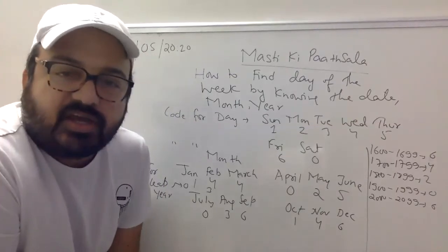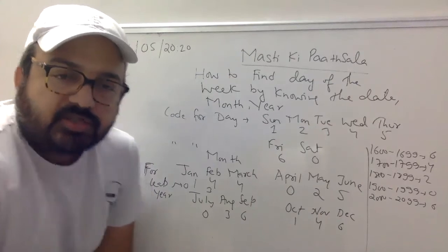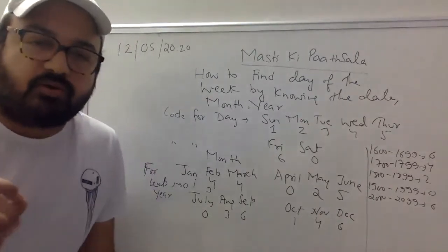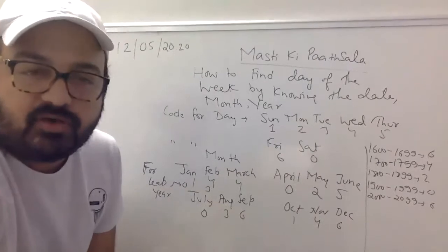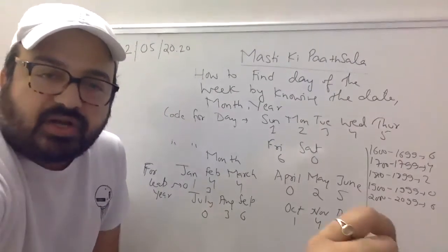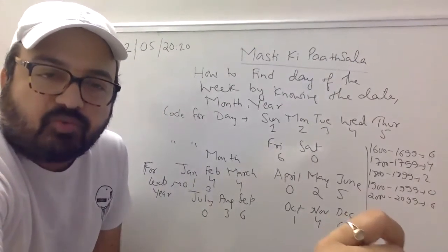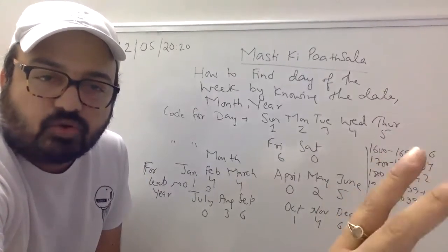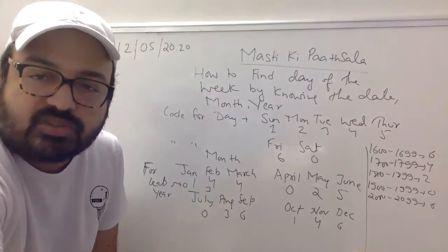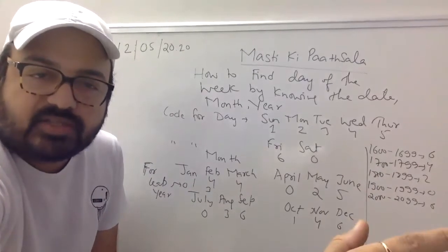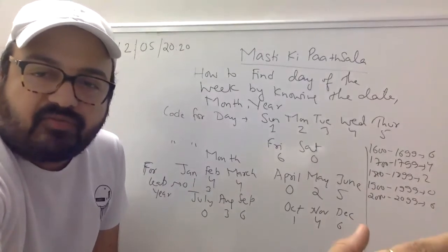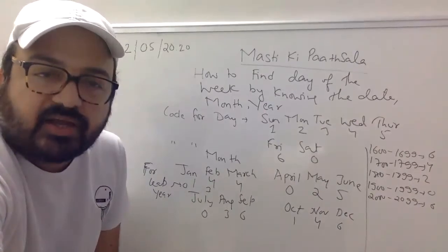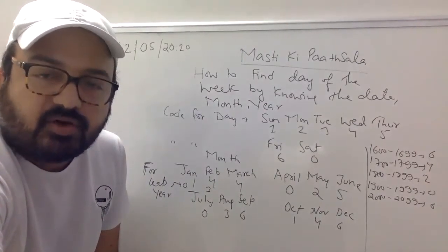अगर मुझे तारीख दे दिया जाए, इसको जानने से पहले आपको कुछ rules पता हों। Day का code: अगर solve करके code 1 बचा तो Sunday, 2 बचा तो Monday, 3 तो Tuesday, 4 तो Wednesday, 5 तो Thursday, 6 तो Friday, और अगर 0 है तो Saturday.